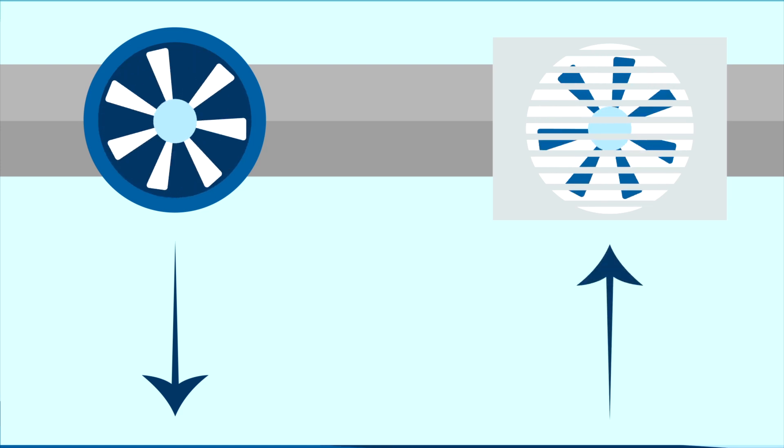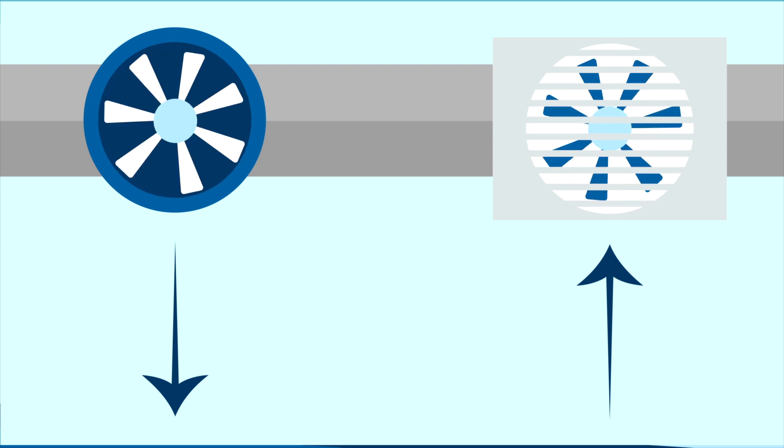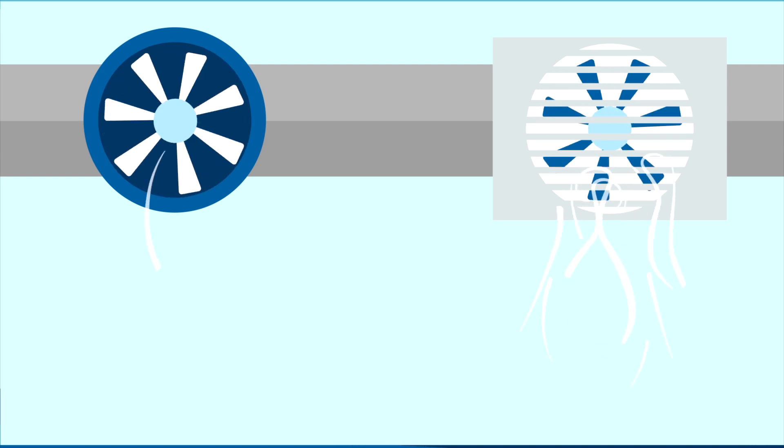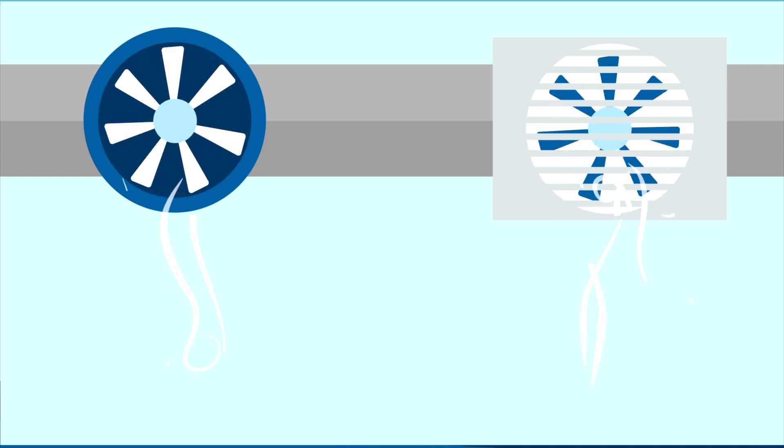Whichever fan is doing more work determines if the room is positive or negative pressure. Negative pressure means the exhaust fan is pulling more air out of the room than the supply is pushing into the room.